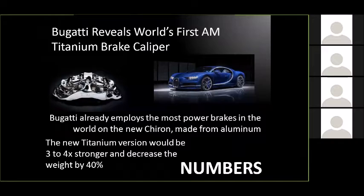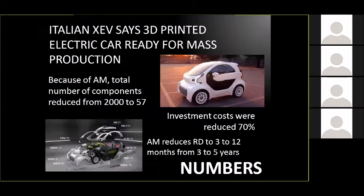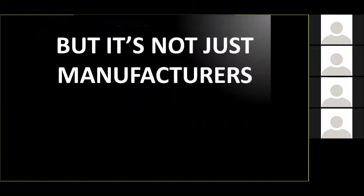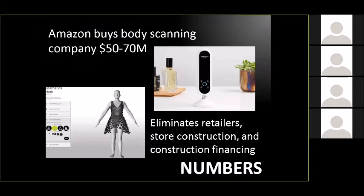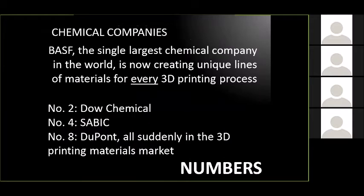There's a titanium 3D printed brake caliper system going into production cars — not prototyping, actual production. A new car they say they can 3D print and mass produce. Amazon bought out a body-scanning company, wanting to hit the fashion market so they can scan you at home and ship you 3D printed clothing customized to you. And here's big money: the top chemical companies in the world — BASF, Dow, and DuPont — are starting to create lines of 3D printing materials. These are the top dogs saying, 'We are creating new products for this platform,' and that means a lot.